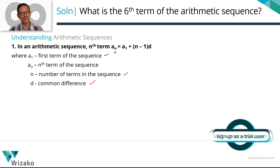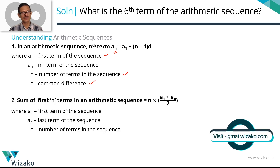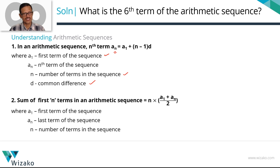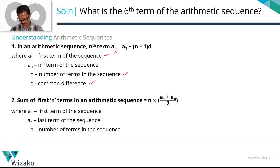The second formula computes the sum of the first n terms of an arithmetic progression: S = n · (a_1 + a_n) / 2, where a_1 is the first term, a_n is the last term, and n is the number of terms. That gives us the sum of the first n terms of the arithmetic sequence. Let's keep these two formulae in mind when solving this question.